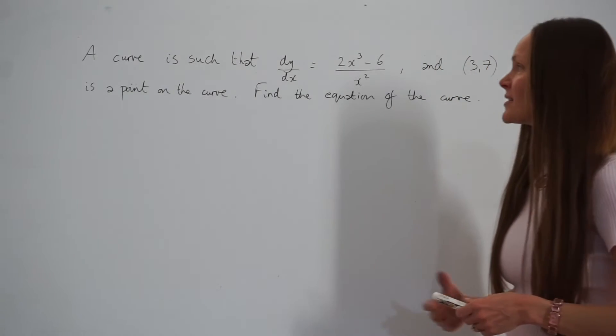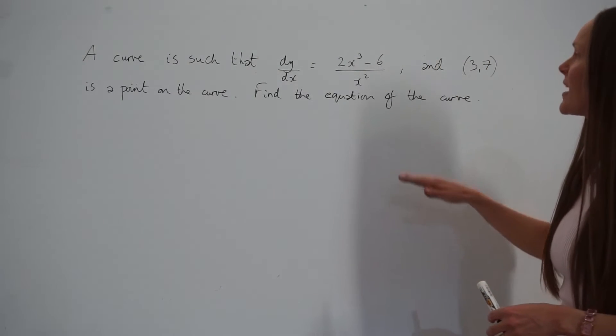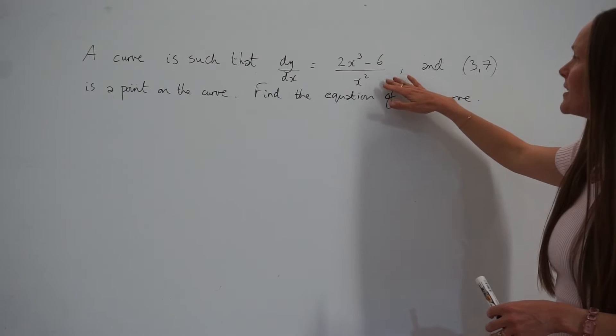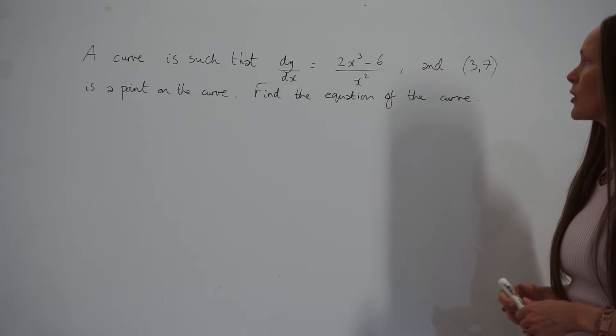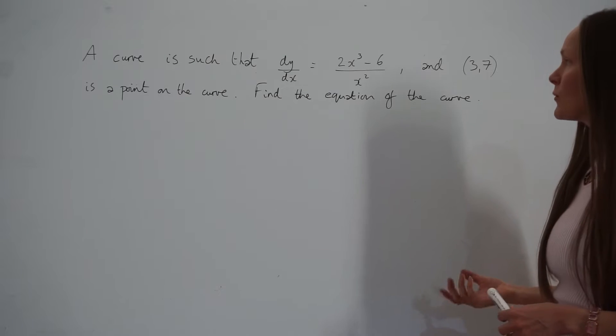In this example, a curve is such that dy/dx is equal to 2x³ minus 6 over x², and (3,7) is a point on the curve. Find the equation of the curve.